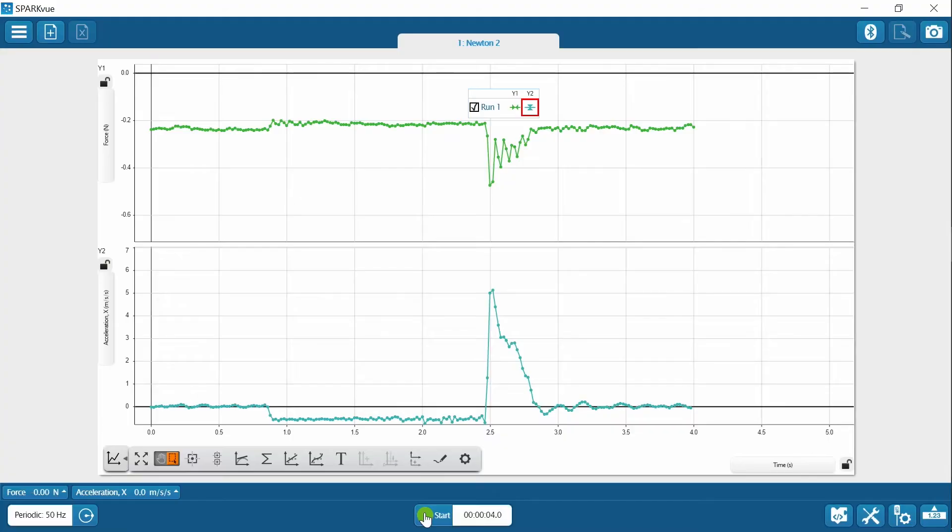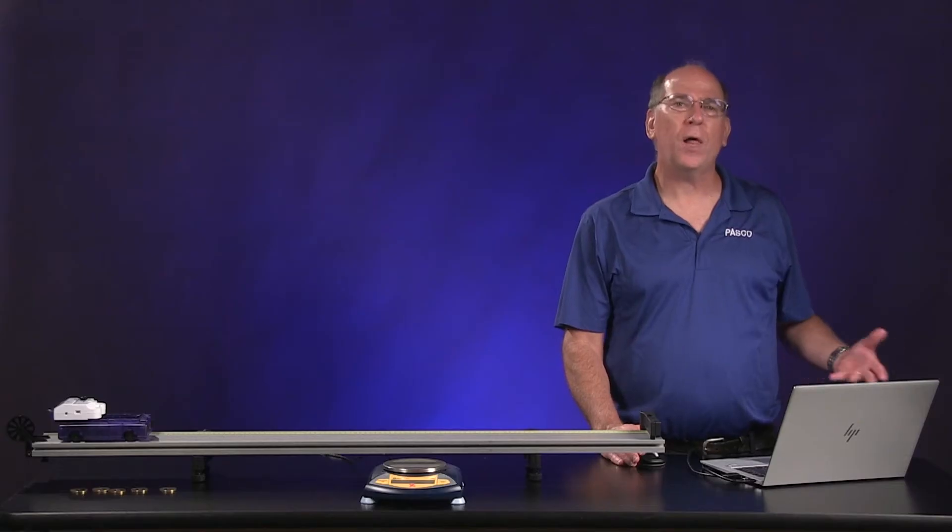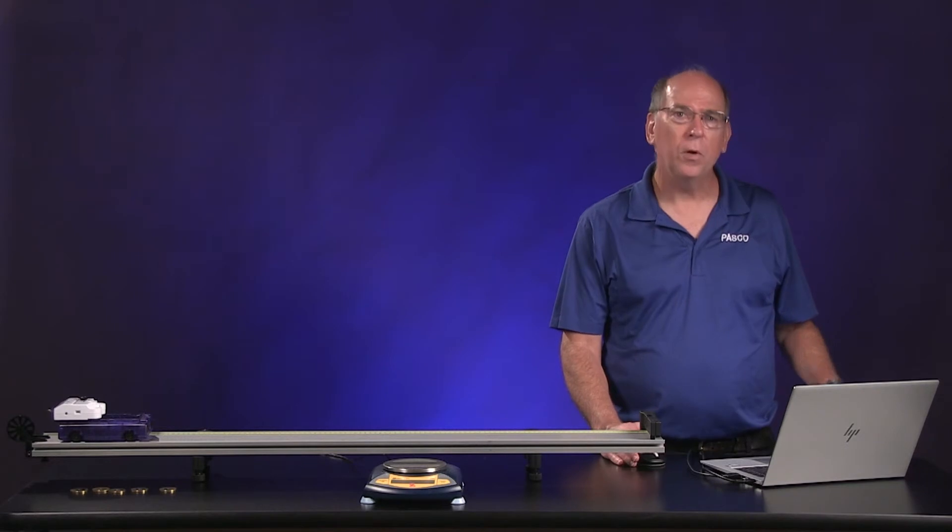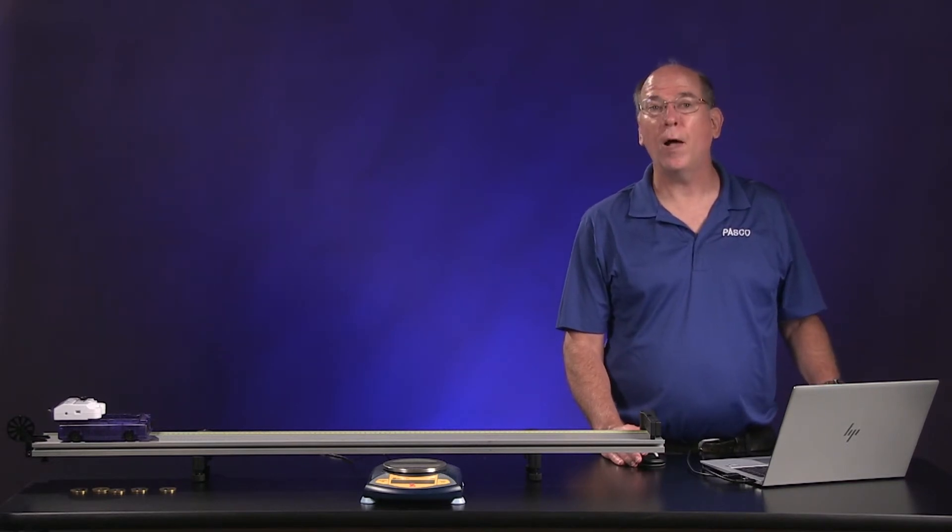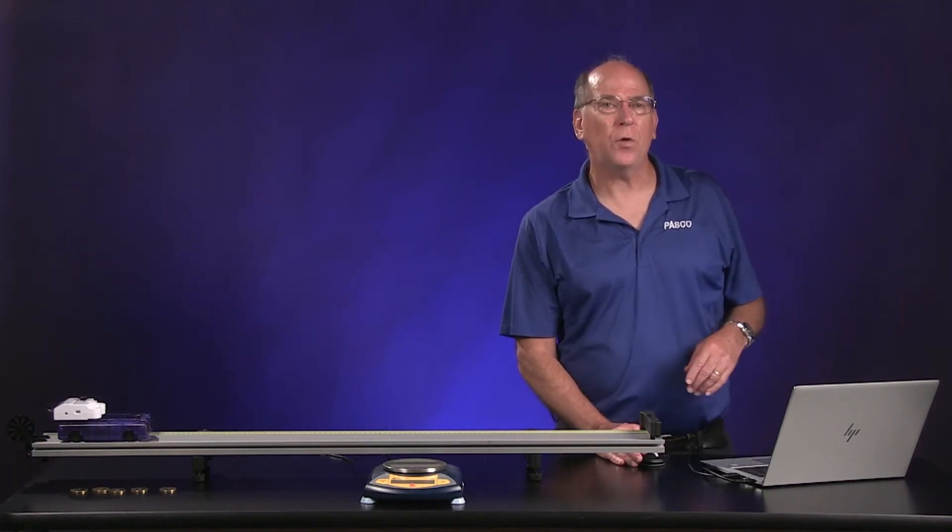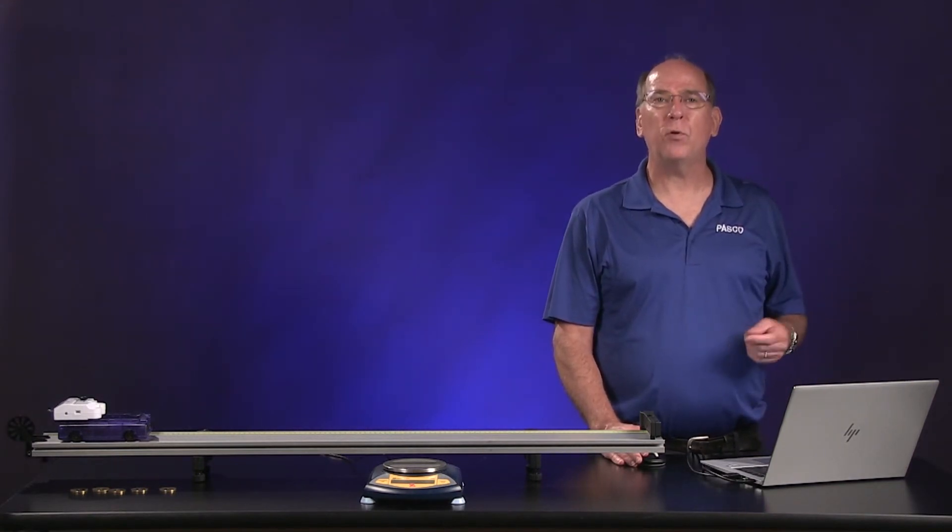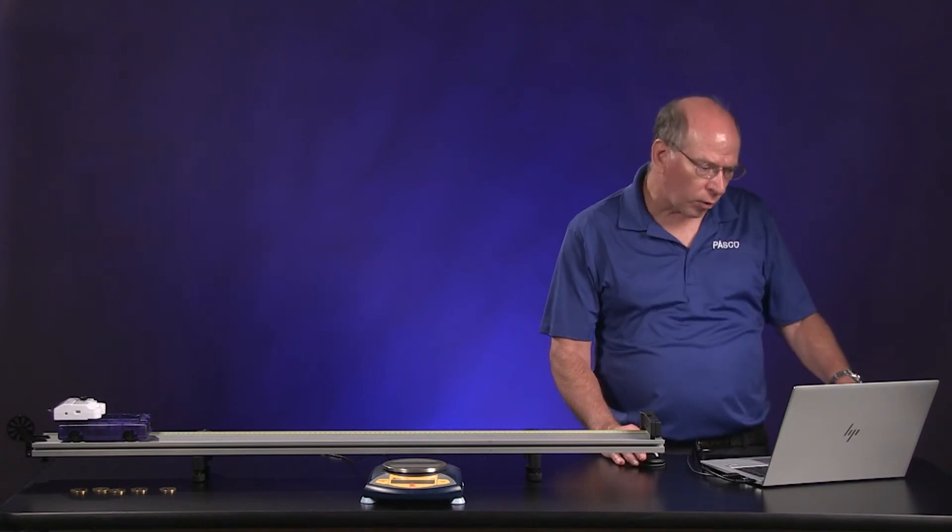We can tell from the force graph when the cart was released because the tension force drops a little, then stays fairly constant. We want to select the part where the cart was accelerating and get the average or mean force value. We'll enter that in the data table for trial one. We'll do the same for the acceleration graph, and then we can add 20 more grams to the hanger and repeat five more times.